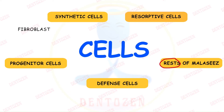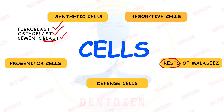Looking at the subtypes of synthetic cells: cells that form fibers are called fibroblasts, cells forming bone are called osteoblasts, and cells which form cementum are called cementoblasts. For resorptive cells, fibers are destroyed by fibroblasts themselves — fibroblasts both form and destroy fibers — whereas bone and cementum are destroyed by different cells.